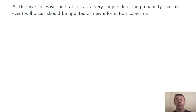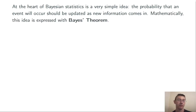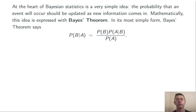The probability that an event will occur should be updated as new information about the event comes in. Mathematically, we express that idea with Bayes' Theorem, which, in its most simple form, looks like this.